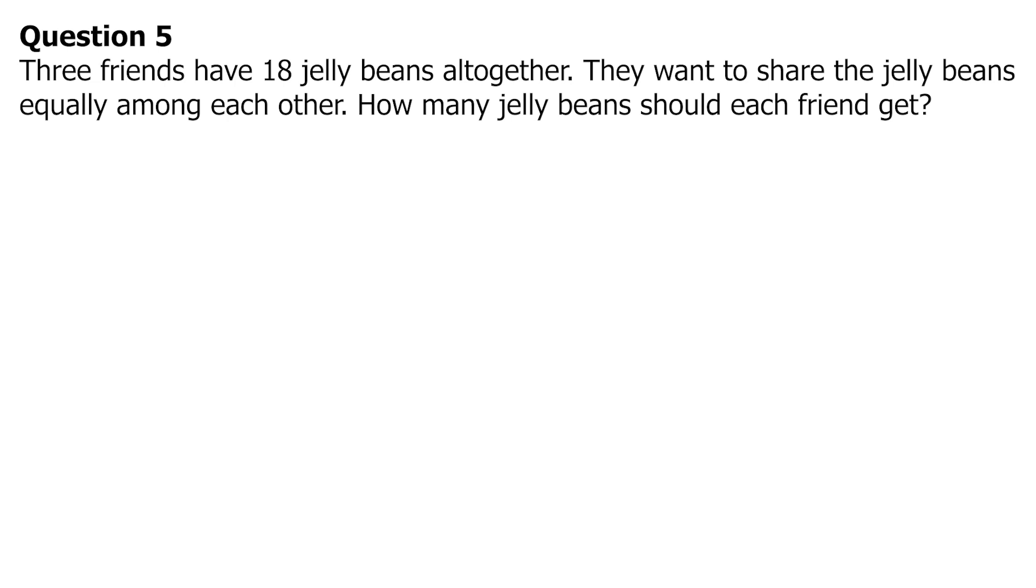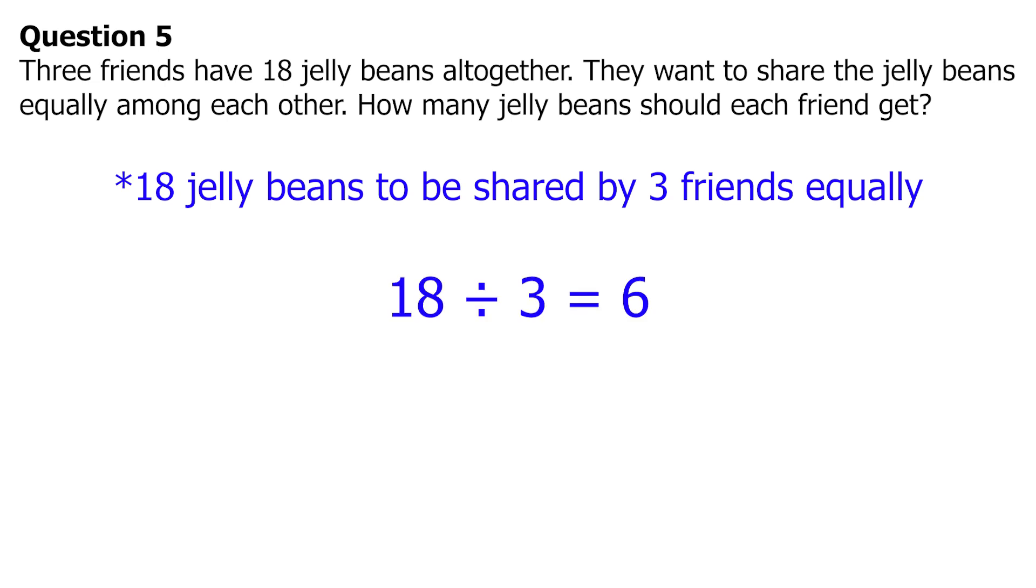If 3 friends want to share 18 jelly beans equally, they would need to divide the total jelly beans by 3 equally, which is 18 divided by 3 equals 6 jelly beans. Therefore, each friend would get 6 jelly beans.